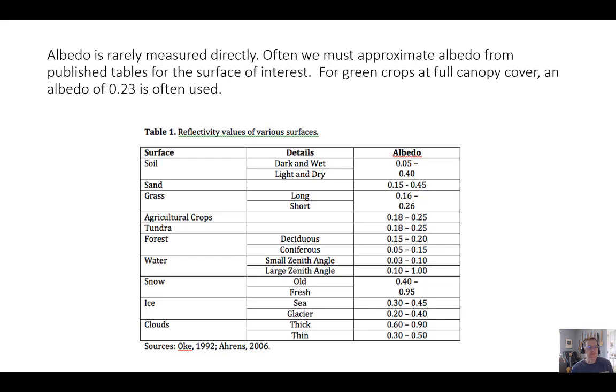Again, albedo is rarely measured directly. Most people don't have one of those instruments. A lot of the time you just have to estimate what the albedo is based on the large amount of data in the scientific literature. Soils—soil albedo changes as a function of wetness. It can be anywhere from 0.05 to 0.4. Sands, grass, lots of different ranges. A lot of crops are in that around 0.2, 0.23, in that kind of range.